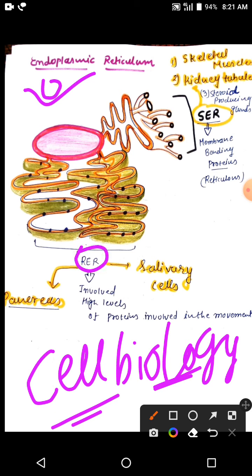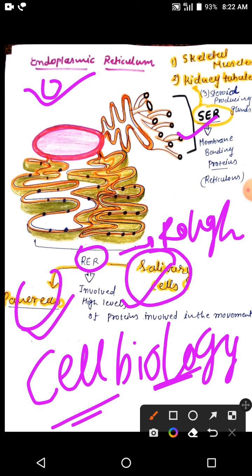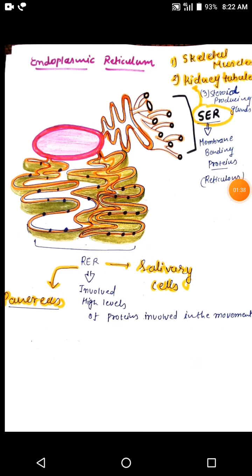First of all, we will see that there are two types of endoplasmic reticulum: RER and SER. RER which is connected with protein synthesis, and SER is connected with lipid synthesis. RER contains ribosomes, so it is called the rough endoplasmic reticulum, and it is found mainly in cells which are associated with protein synthesis, like salivary cells and the pancreas.